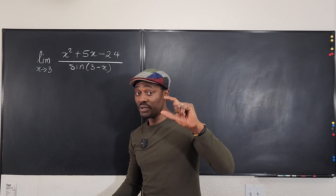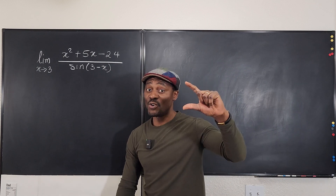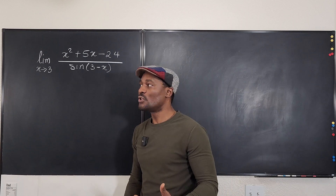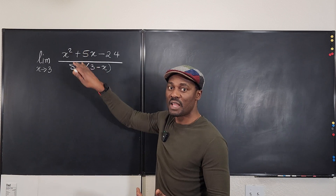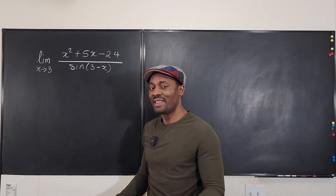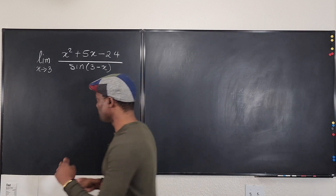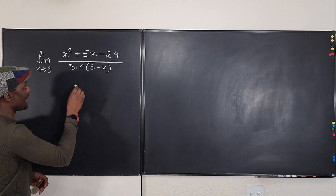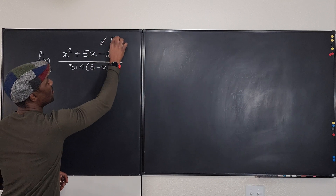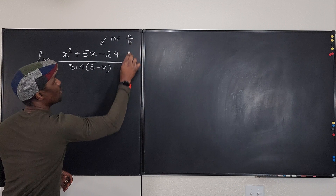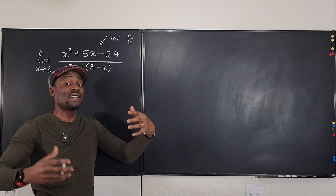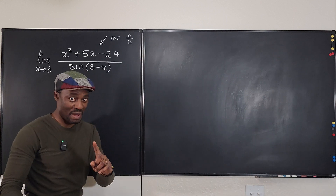A 0 over 0 indeterminate form — once you get that, L'Hôpital's rule says you take the derivative of the top, take the derivative of the bottom, then try to take the limit again and you'll get your answer. So because we have the indeterminate form 0 over 0, it allows for L'Hôpital's rule. It is the only indeterminate form that allows for L'Hôpital's rule. Remember that.